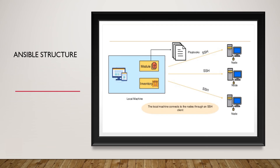In the Ansible architecture, on the left-hand side you can see the local machine, and on the right side you can see the nodes where changes need to be pushed. The local machine consists of modules, playbooks, and inventory details. Inventory contains the node details — IP addresses or names — where tasks need to be executed. The Ansible server establishes an SSH connection to the Ansible nodes to push the playbook.